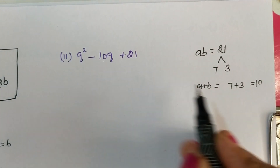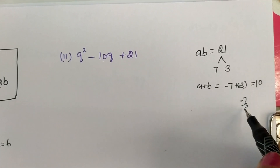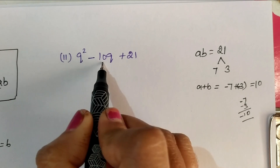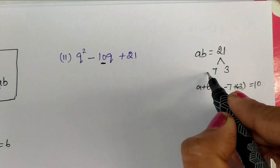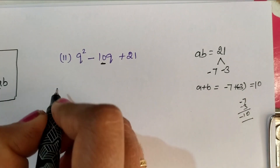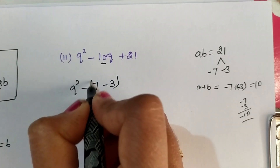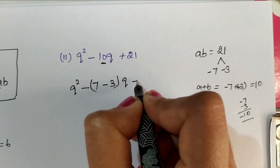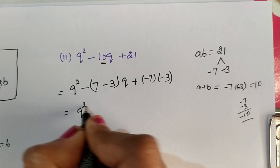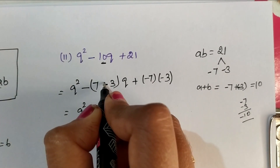But here we have minus 10, so we can take minus 7 and minus 3. Minus 7 minus 3 is minus 10. When you add A and B we should get this term, and when you multiply we should get 21. A and B are negative — minus into minus is plus. So now we can write Q square minus 7Q minus 3Q plus minus 7 into minus 3.